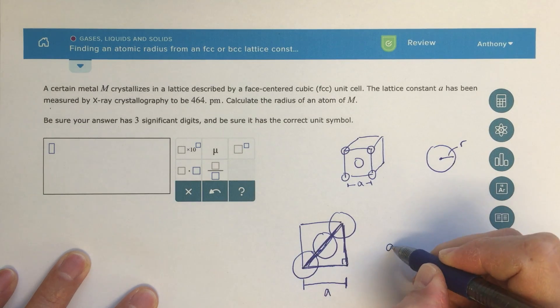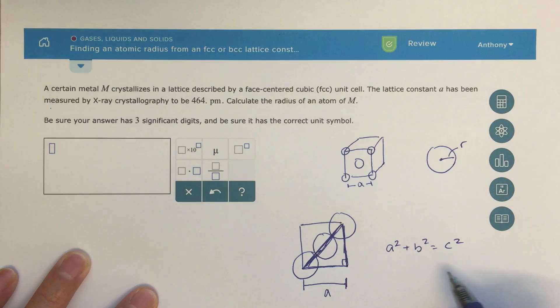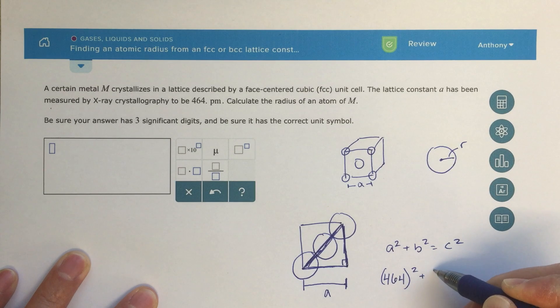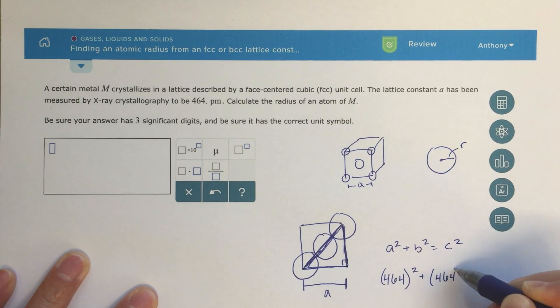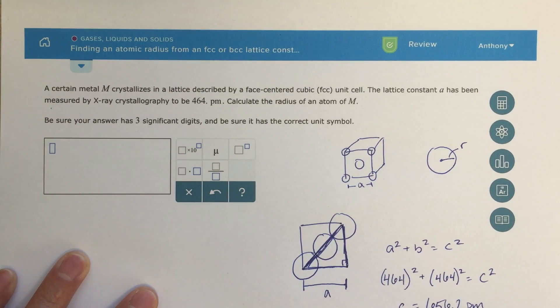It's going to be a squared, if I call this a, plus b squared equals c squared. That's the equation to find the distance length here. My a value is the same as my b value, 464 picometers, so I can do this calculation: 464 squared plus 464 squared equals c squared. Solve for c, and c is this distance here.